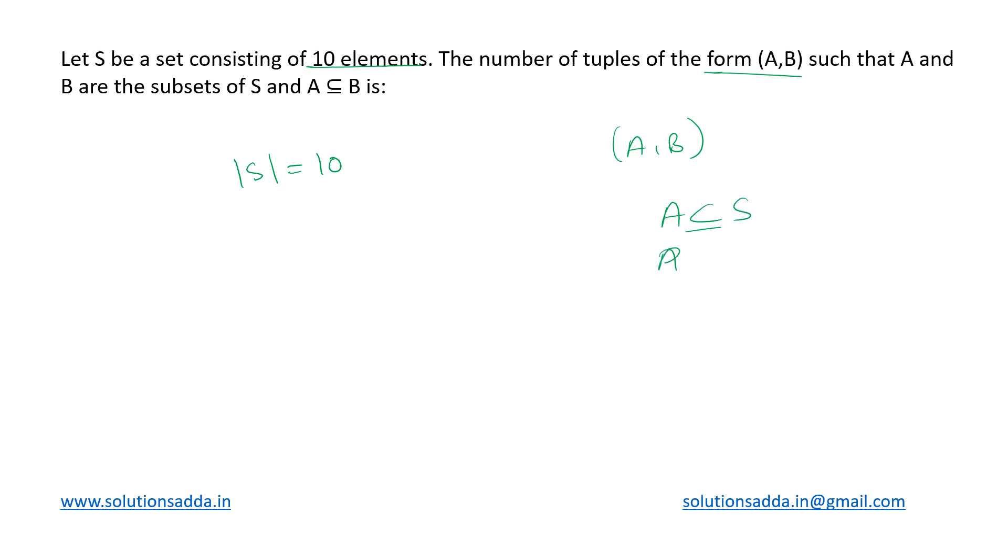The conditions are: A and B are both subsets of S, and A is a subset of B. The subset I mentioned is not a proper subset—both can be equivalent as well. Using these three conditions, what is the number of tuples we can create?